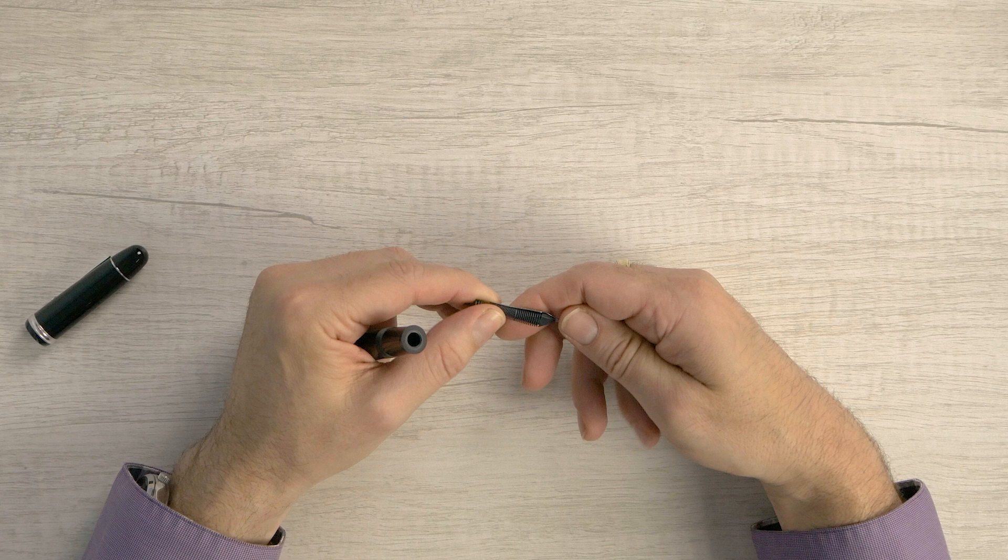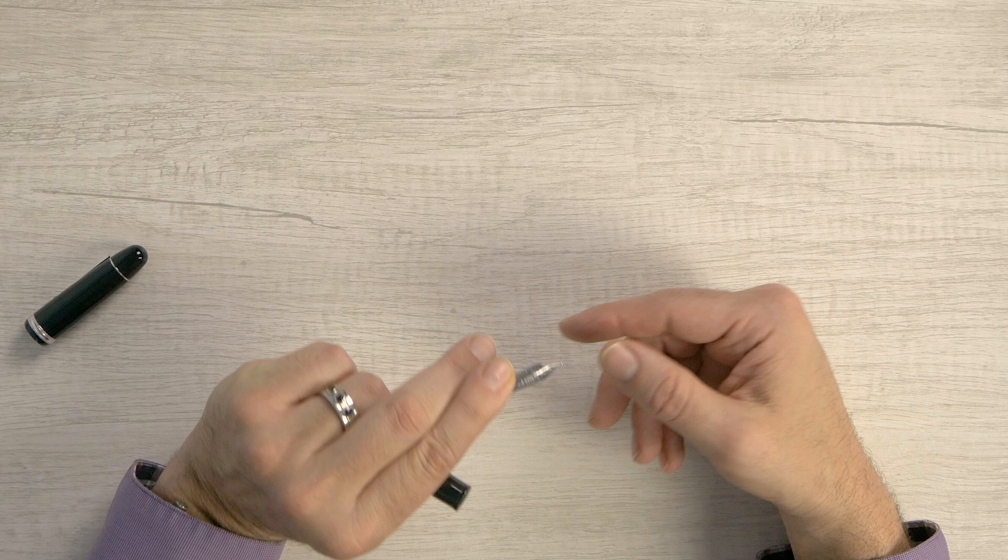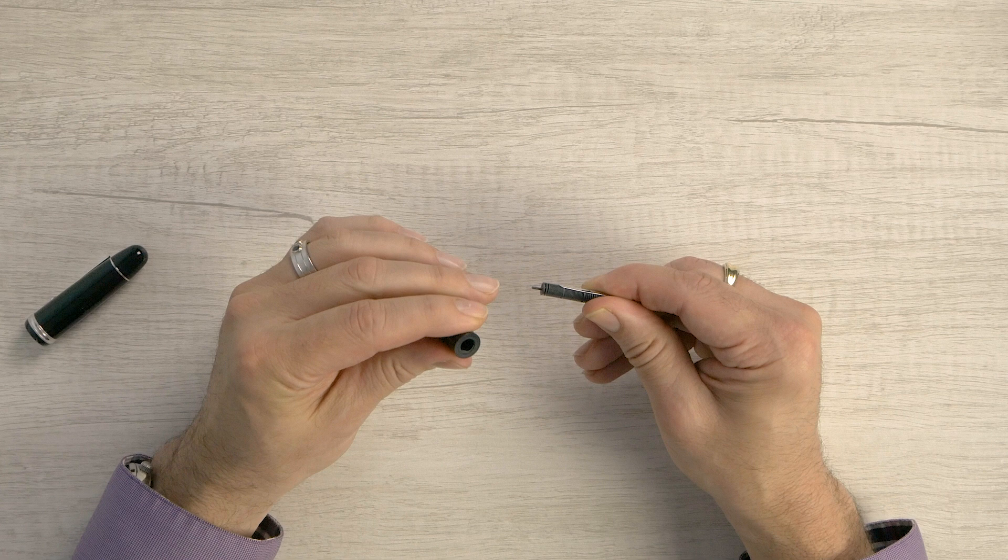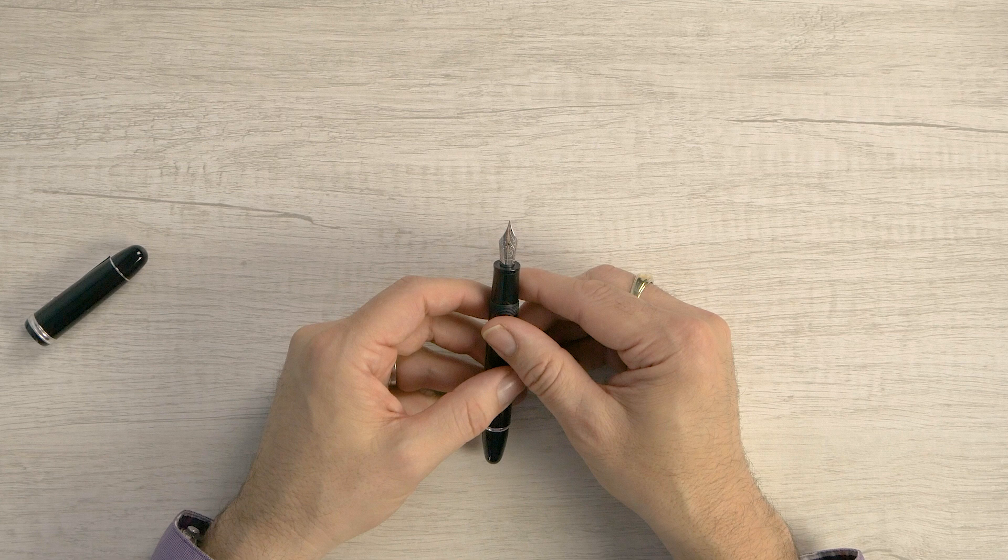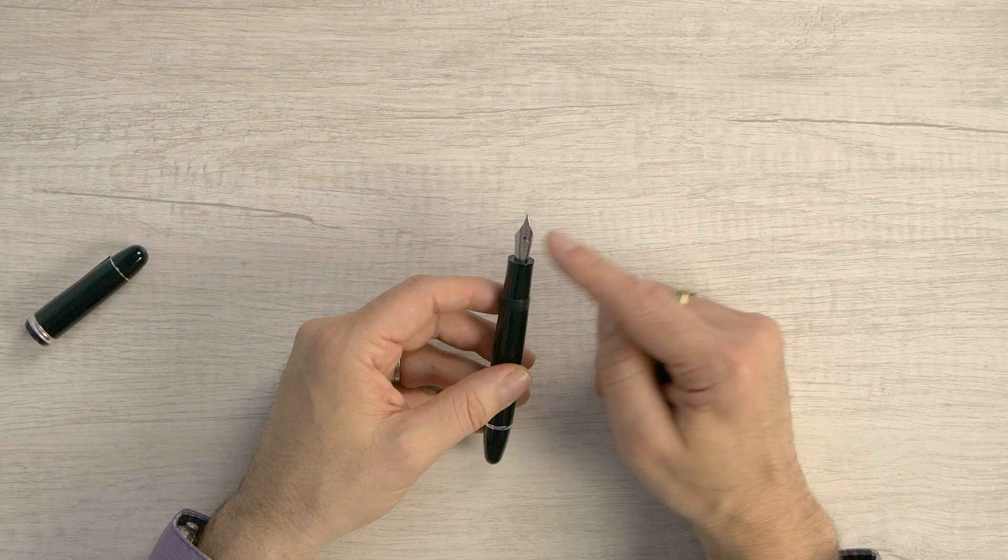So you could, this also means you could replace this nib with an Anderson nib. Maybe you've got a 1.5 or an extra fine or something. Or any other number 6 nib you could slide in here to replace. If maybe you don't like the fine, medium, and 1.1 stub options. But maybe you want a broad or that extra fine, you can take this out and put in any other Yovo number 6 nib. Friction fit and that's all there is to it.